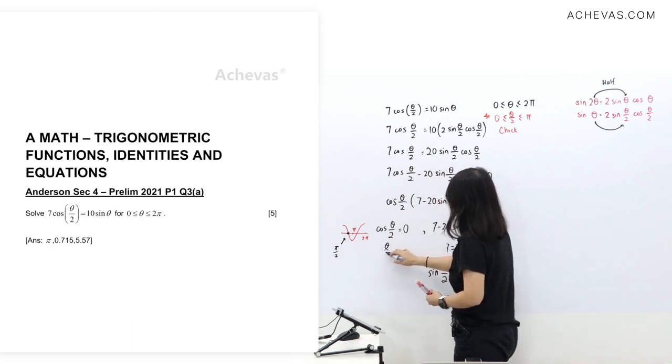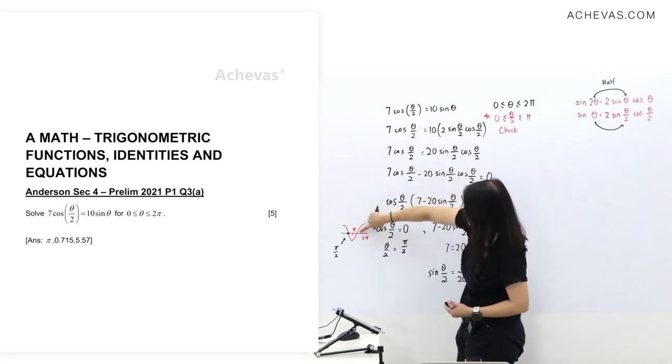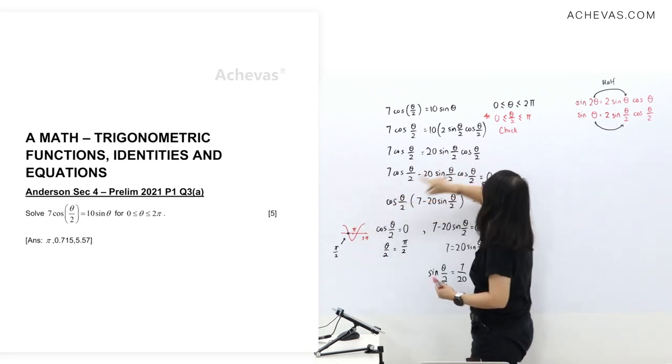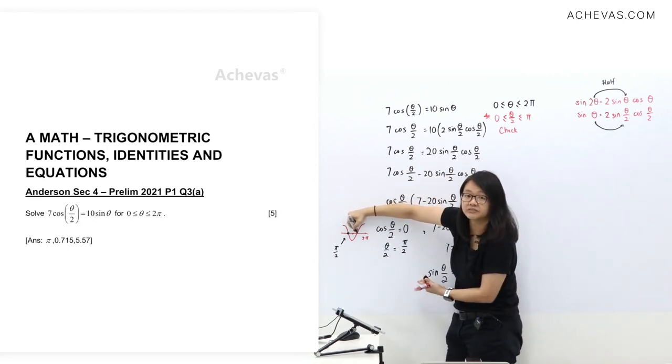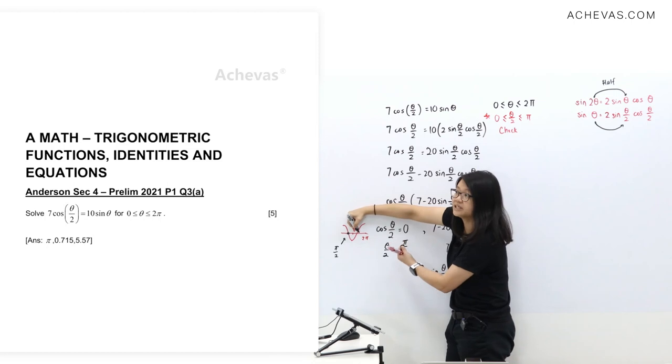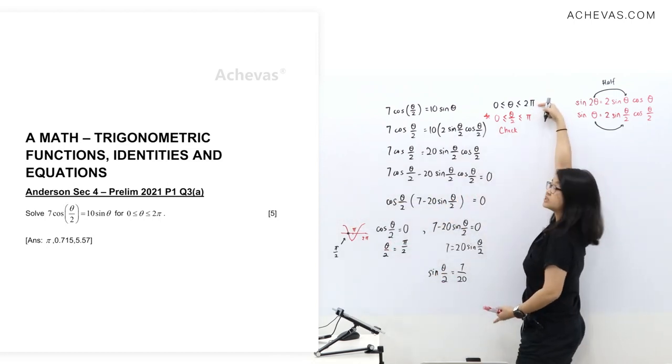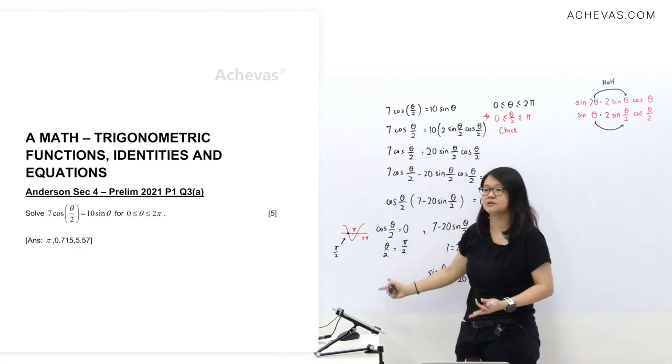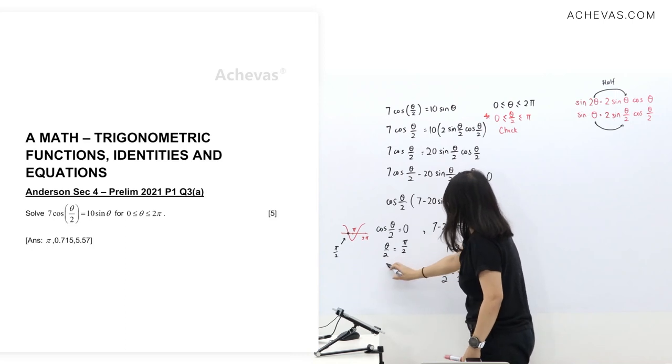Next, I'll write, theta over 2 will be equals to pi over 2. Now notice that pi over 2 is within the range that I want. The next point here will be exceeding pi. Exceeding pi is the answer that I do not want. This point over here. So I don't want to write it already. If you write it and go on further to check the last step, you will still reject it using this one. So we want to reject as early as possible to save some time.